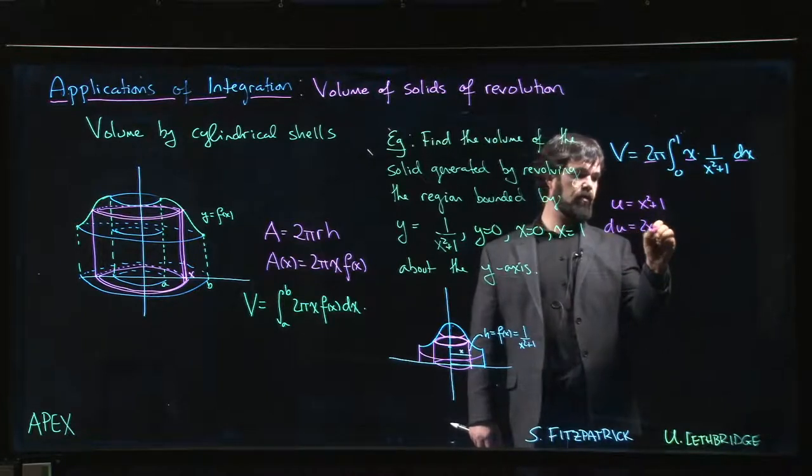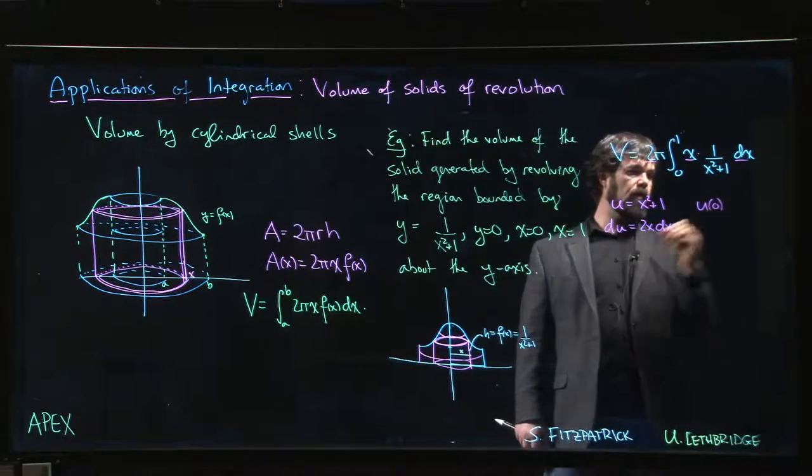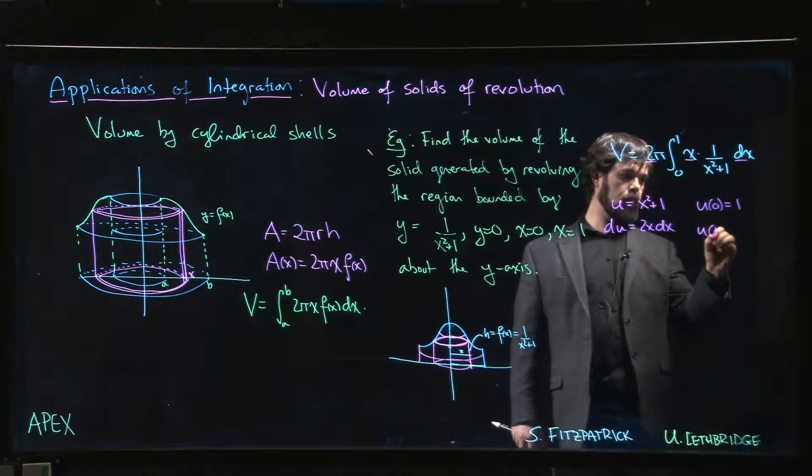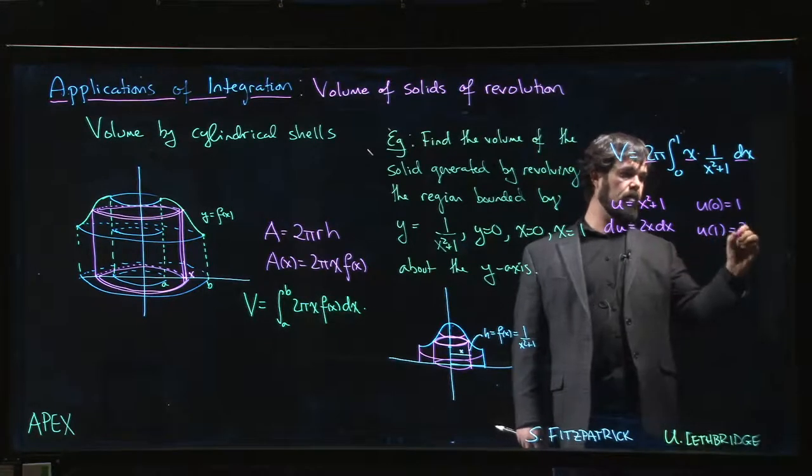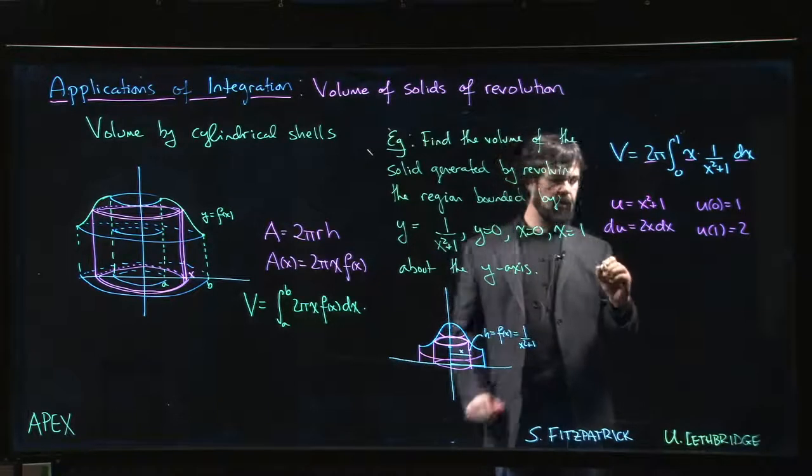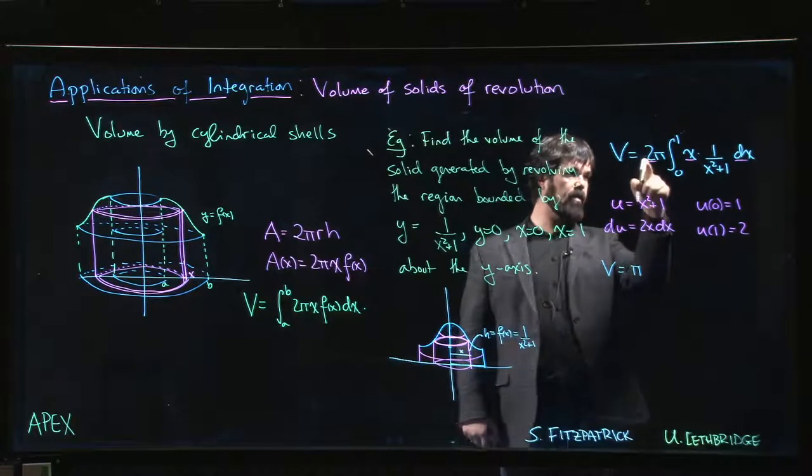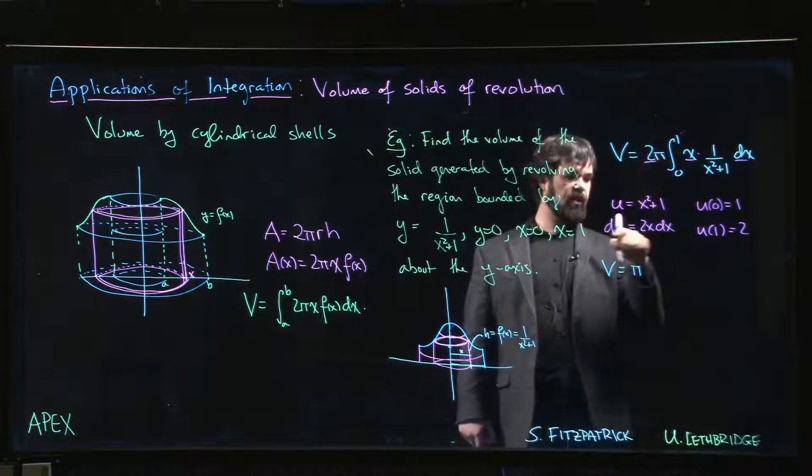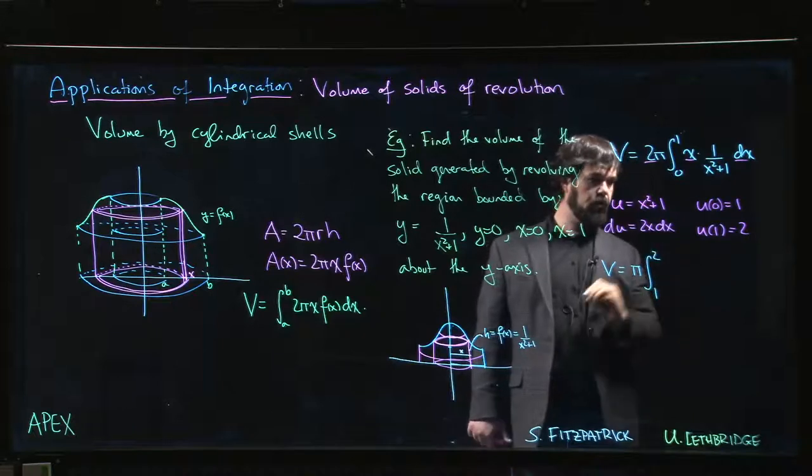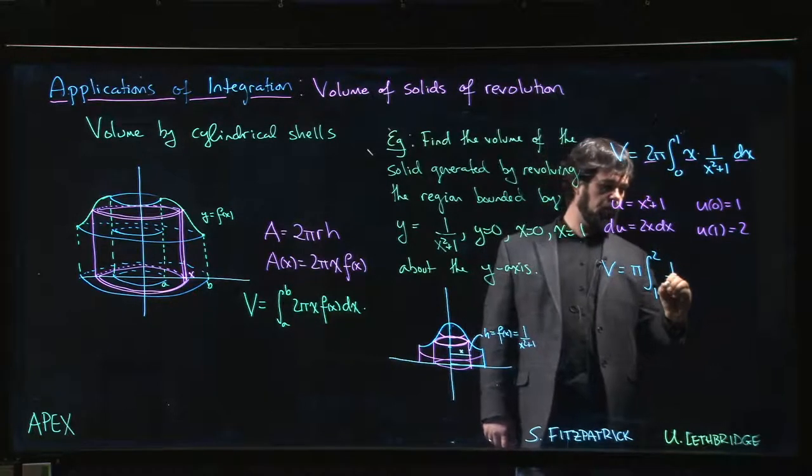We could let u equal x squared plus 1. Then du would be 2x dx. u of 0 will be 1. u of 1 is 1 squared plus 1, which is 2. And so with that substitution, we can rewrite the volume as pi times the integral from now 1 to 2—the limits change—we just have simply 1 over u times du.